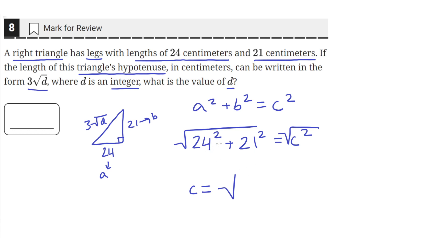So if you put in your calculator 24 squared plus 21 squared, you'll get 1017. So the square root of that is equal to c.